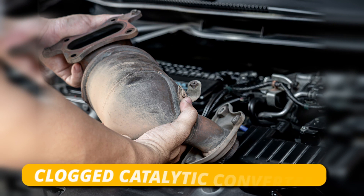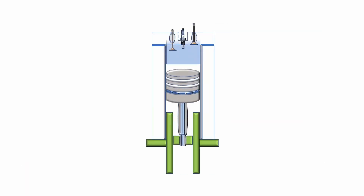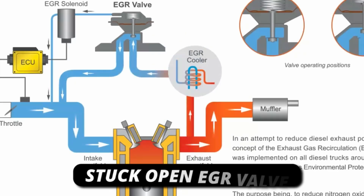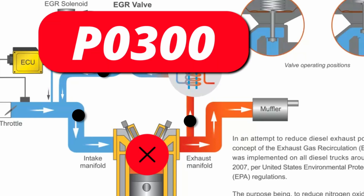Another possible cause is a clogged catalytic converter. If it's clogged, exhaust gases can become trapped inside the combustion chamber and prevent proper combustion. This is similar to a stuck open EGR valve — when the EGR valve is stuck open, it recirculates exhaust gases into the intake manifold, and a continuous flow of those gases takes up space in the combustion chambers, which can also throw a P0300 code.